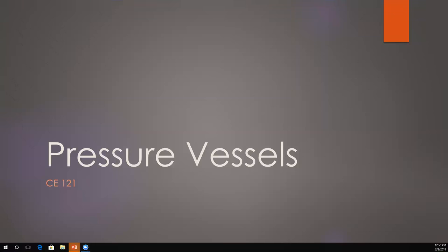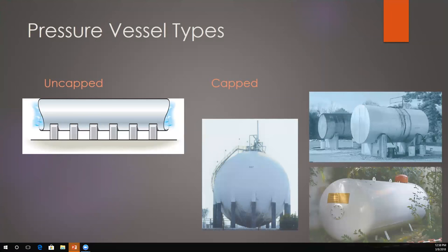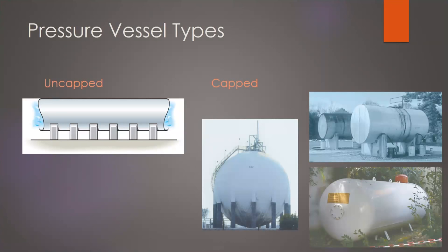Today's topic is pressure vessels. Pressure vessels refer to a type of structure that we use quite often as engineers to serve a number of purposes. For example, in civil engineering we have lots of pipes — mechanical engineering deals with them too. Those pipes are often filled with a pressurized liquid, and that constitutes what we consider a pressure vessel.